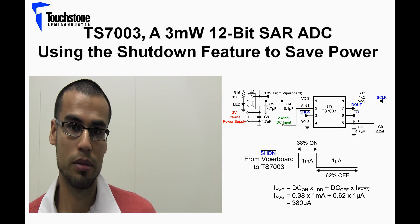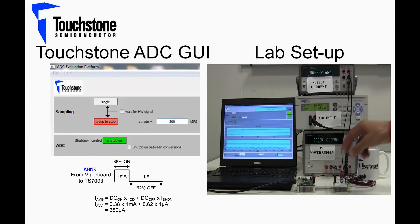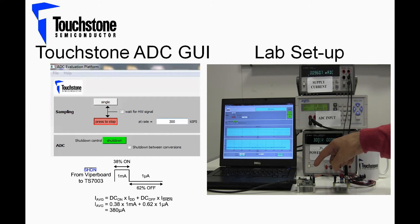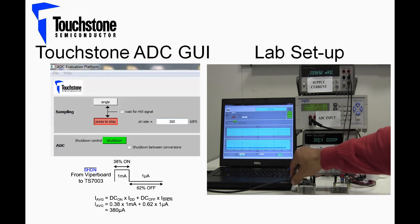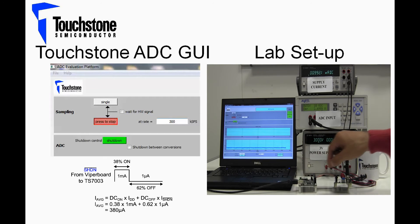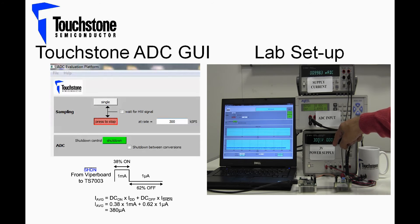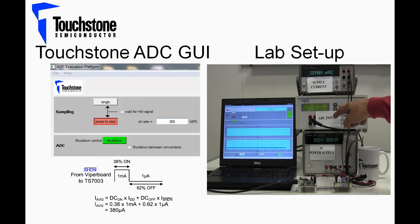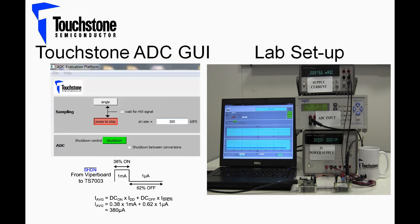Now let's go to the lab. Here I have the TS7003 Demo Board connected to the Touchstone Data Acquisition Viper Board, and in turn the Viper Board is connected to the PC via USB cable. An external 3-volt power supply is being applied to the TS7003 Demo Board. The input voltage to the TS7003 is a DC voltage of approximately 2.5 volts. The sampling rate is set at 300 kilo samples per second.